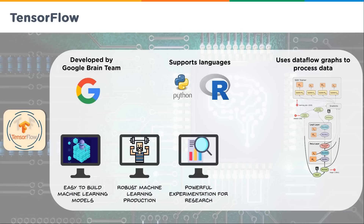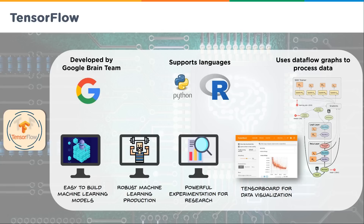TensorFlow offers powerful experimentation for research — it's very easy to switch a couple of lines in your TensorFlow setup to try out a new neural network and see if it gives you better results. TensorBoard for data visualization is another huge package as part of TensorFlow, put out by the Google Brain Team. TensorFlow is now open source, and TensorBoard makes it quick and easy to present your data visually when working with your CEO or shareholders.